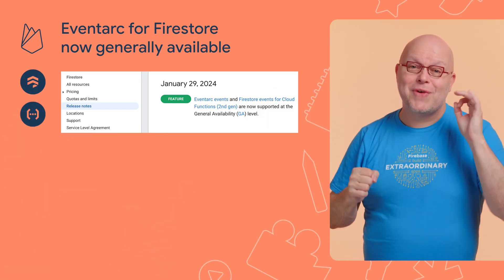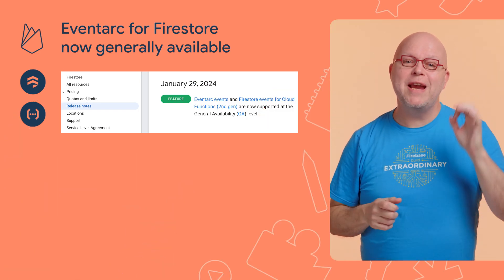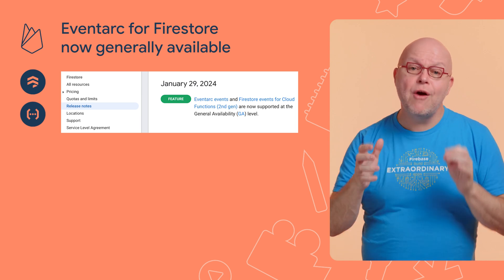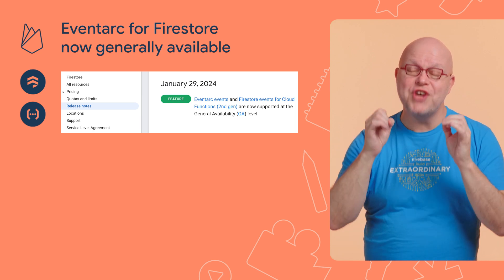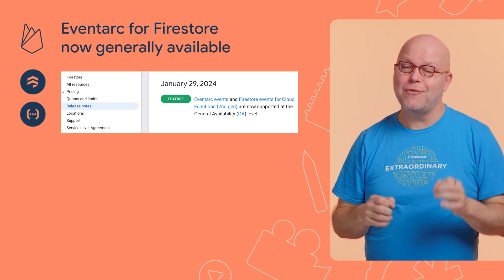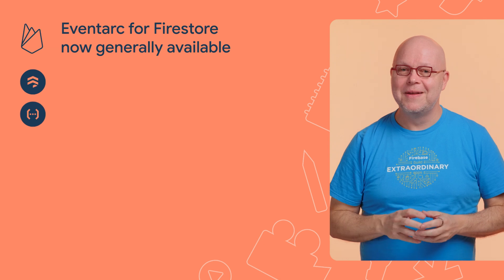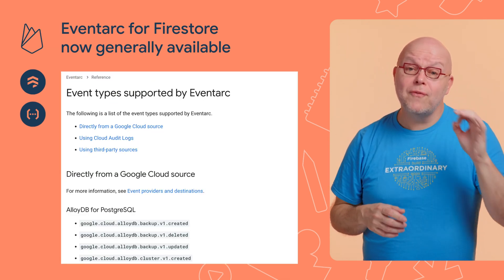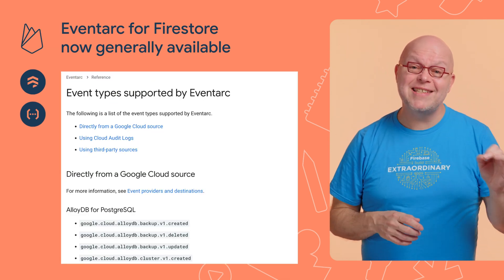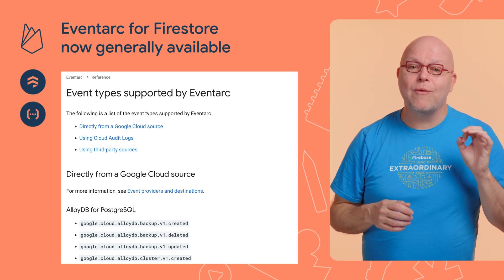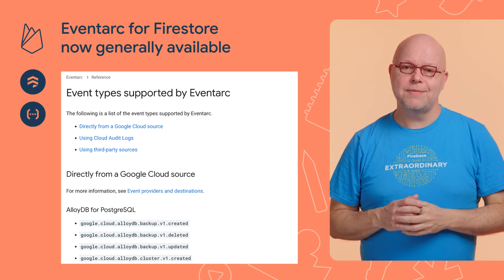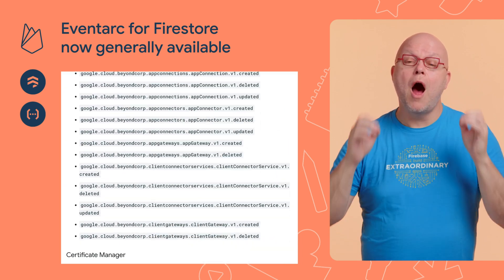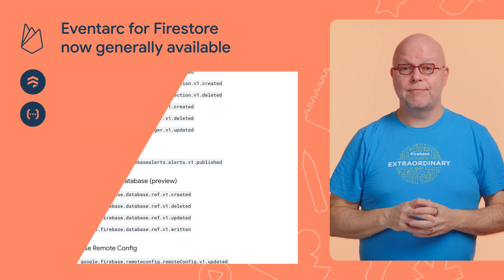The integration of Cloud Functions Gen2 and Firestore is made possible by the EventArc triggering system, and this integration has now graduated to general availability, which means it's ready for your production workloads. EventArc is our infrastructure to trigger server-side code from events in Google Cloud projects, and it now directly integrates with 31 services, with another 162 services through Cloud Logging, and it supports over 3,000 event types.